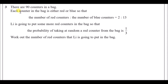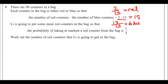Number 3: there are 90 counters in a bag, either red or blue, in a ratio of 2:13. Adding those gives 15 parts total, so red = 2/15 × 90 = 12, and blue = 13/15 × 90 = 78. Double-checking: 12 + 78 = 90. Correct.